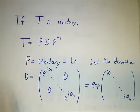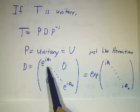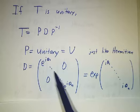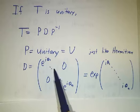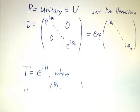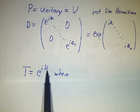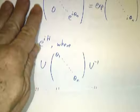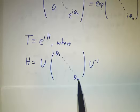The only difference between the Hermitian case and the unitary case, is in the Hermitian case, the D was diagonal with real entries, and now D is diagonal with entries e to the iθ1, e to the iθ2, e to the iθn. But that's just the exponential of iθ1, iθ2, iθn. In other words, T can be gotten by exponentiating i times the Hermitian matrix, where the Hermitian matrix has the same eigenvectors as T does, and its eigenvalues are θ1 through θn.